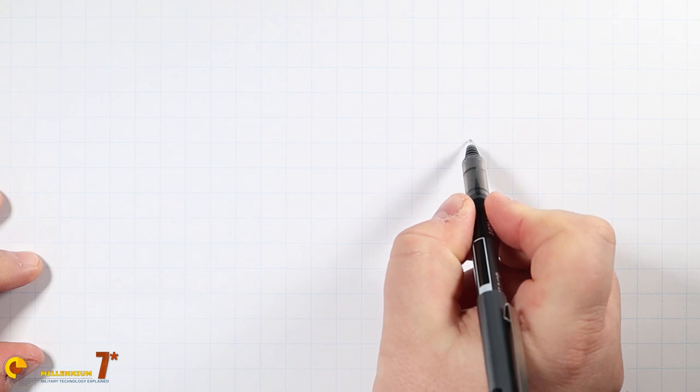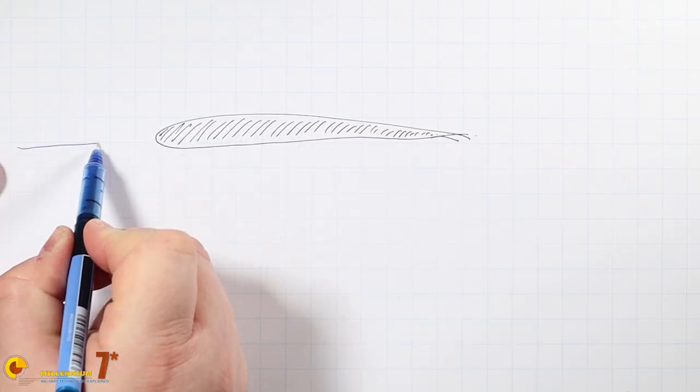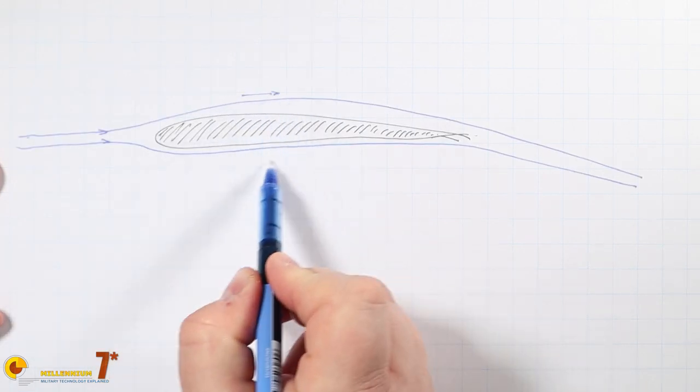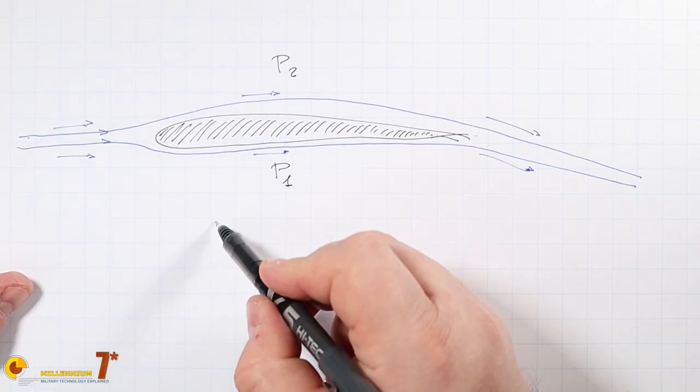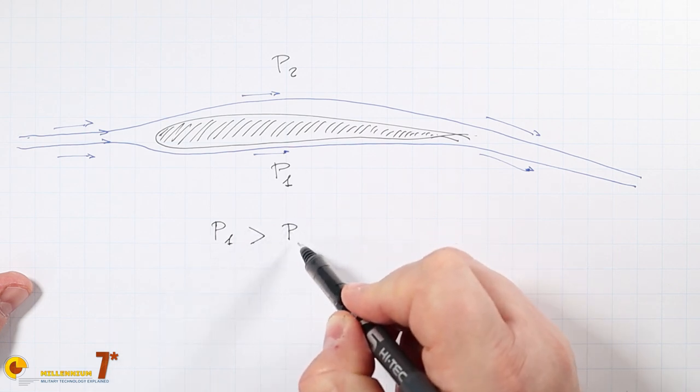The lift of an airfoil at subsonic or transonic speed is generated by the fact that the flow speed above the airfoil is higher than below, hence the pressure above the airfoil is smaller than the pressure below and the wing is sucked upward producing lift.